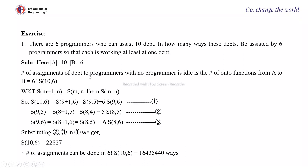The number of assignments of departments to programmers with no programmer idle is the number of onto functions from A to B, which is 6! × S(10, 6). We know from the previous video that S(m+1, n) = S(m, n-1) + n × S(m, n). So we can write S(10, 6) = S(9, 5) + 6 × S(9, 6).